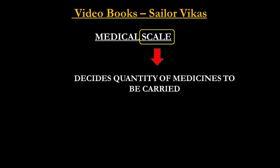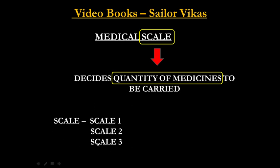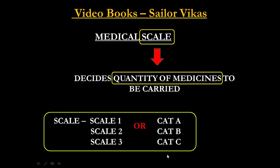Medical scale decides the quantity of medicines to be carried on board. Scales are mentioned in certificates either as Scale 1, Scale 2, Scale 3, or sometimes Scale 4, or alternatively as Category A, Category B, or Category C. This is how scales are mentioned in medical certificates and flag state requirements.